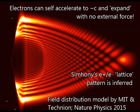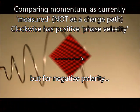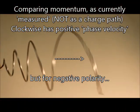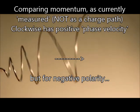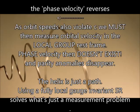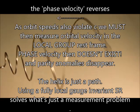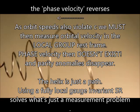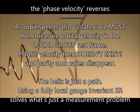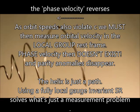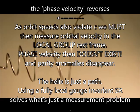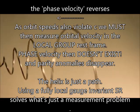Electrons can accelerate and expand with no outside force. This recent finding echoes similar lattice patterns. Comparing momentum as measured, we find positive has apparent positive phase velocity. For negative polarity the phase velocity reverses. As orbit speeds also violate c, we must then measure orbital velocity in the local group rest frame. Phase velocity then doesn't exist and parity anomalies evaporate.